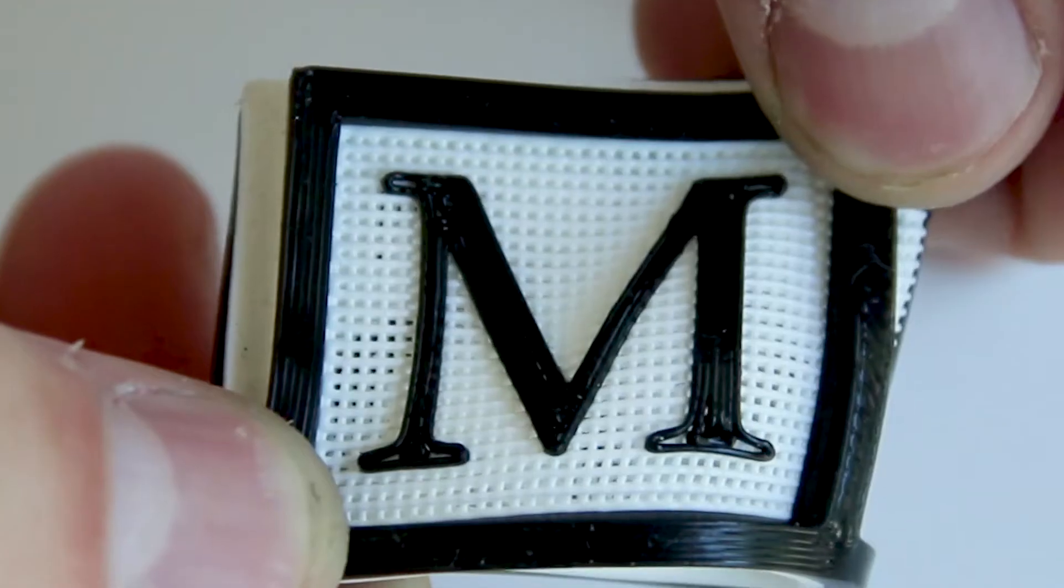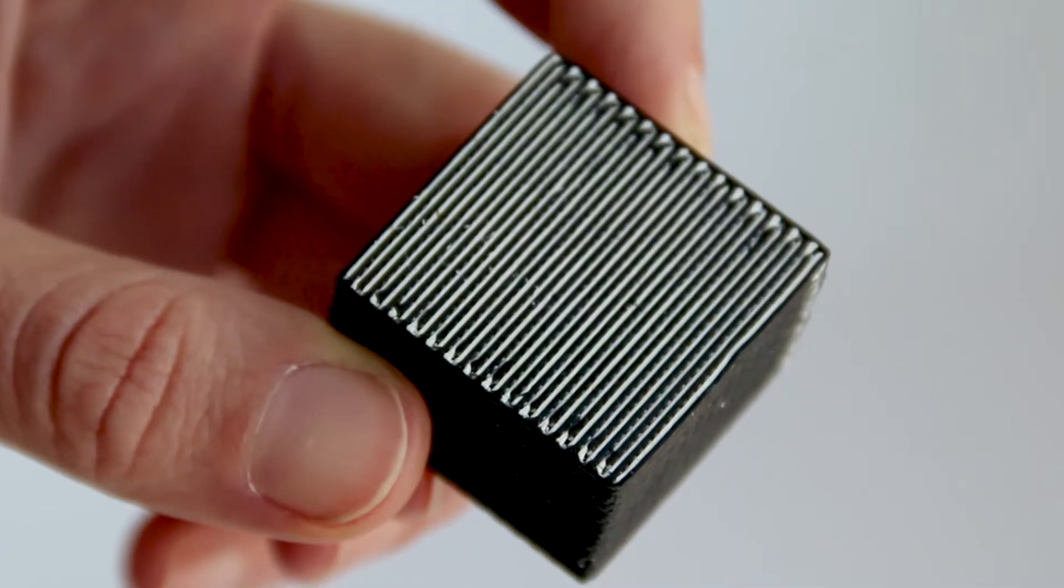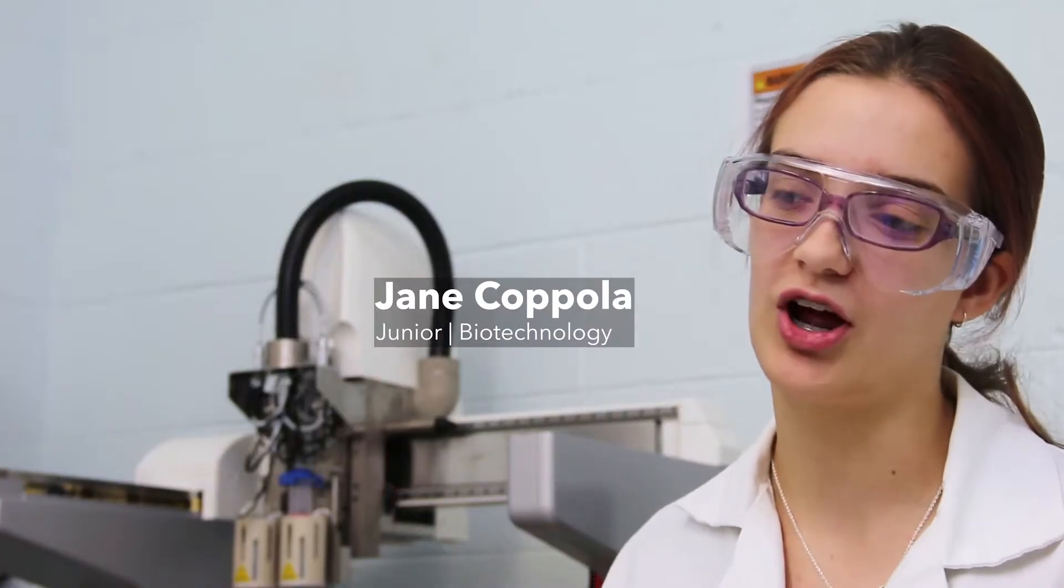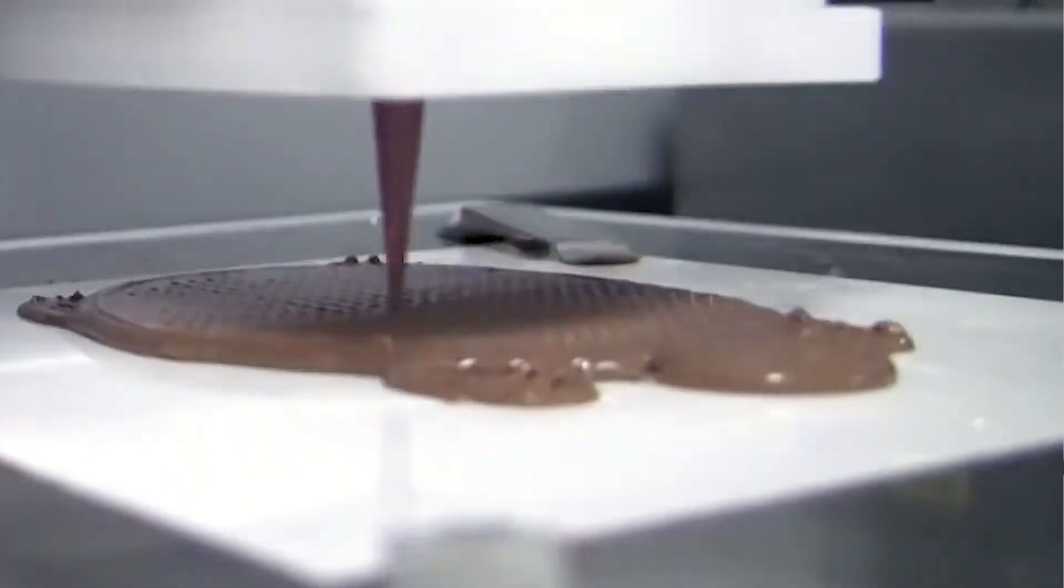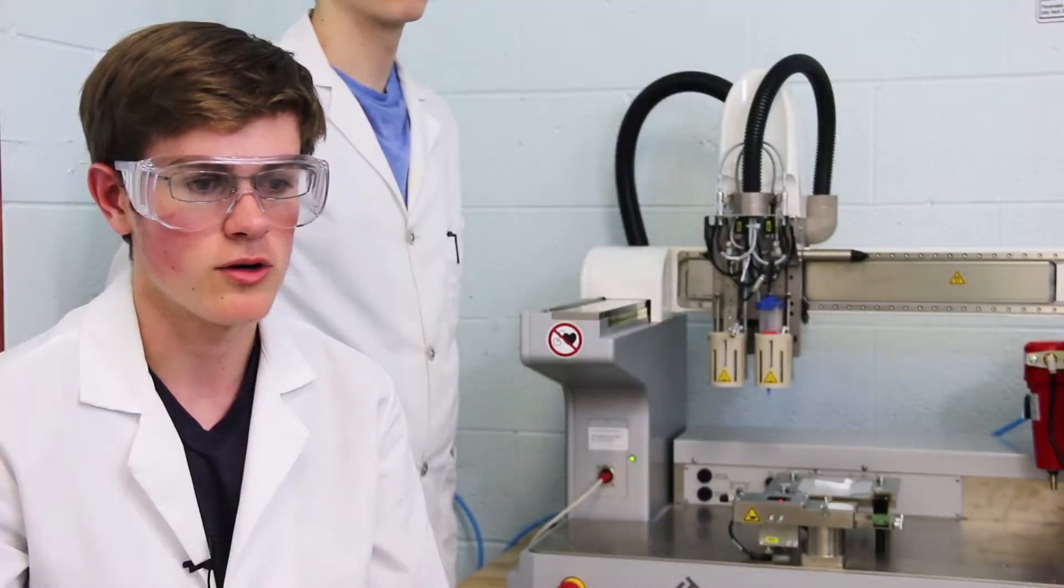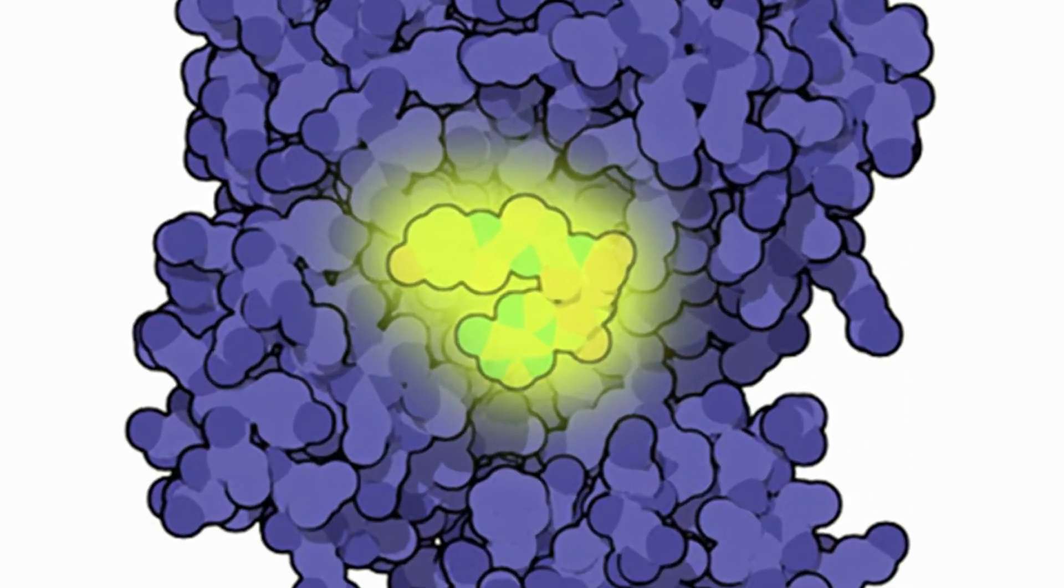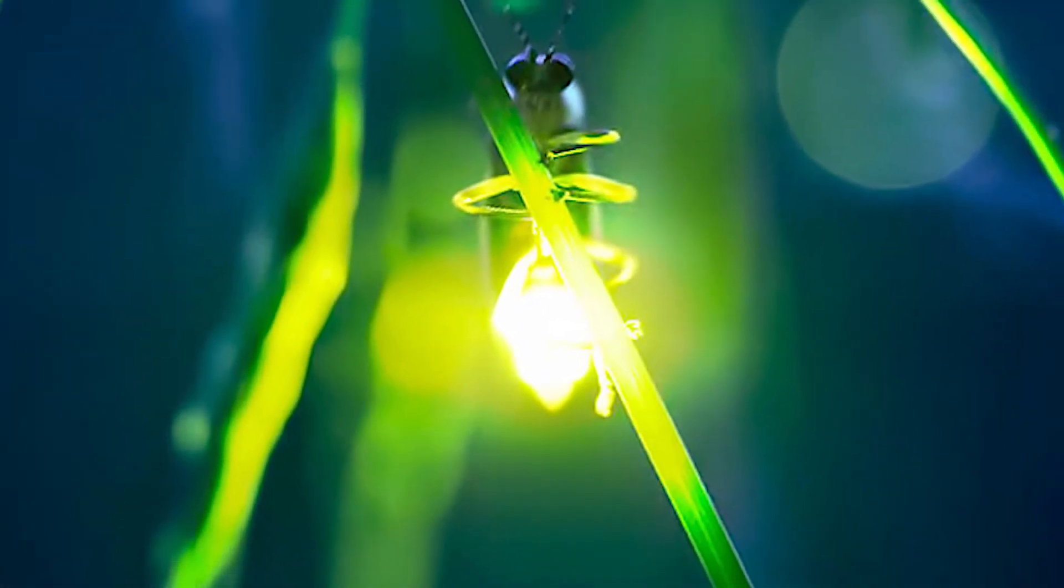We are still working on figuring out all the many different things we can do with the Bioplotter and making a nutrition bar using the different proteins. We want to try and incorporate the Bioplotter using firefly cells to create firefly luciferase, which is the part of the firefly that makes it glow.